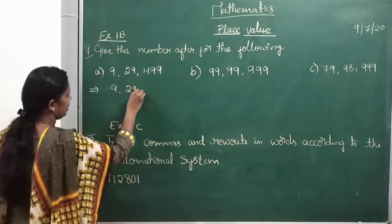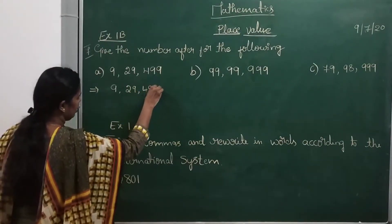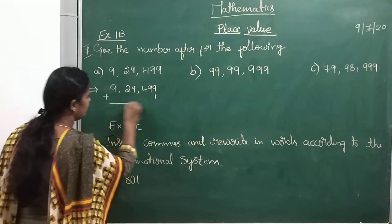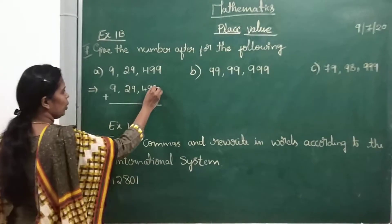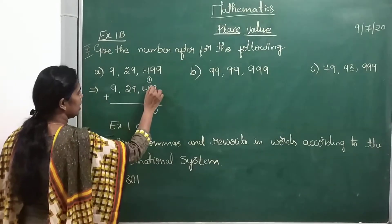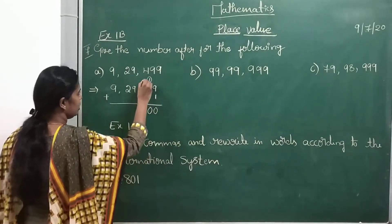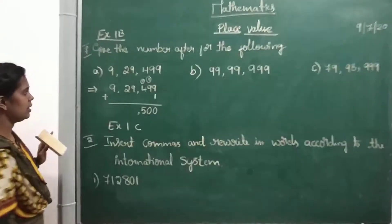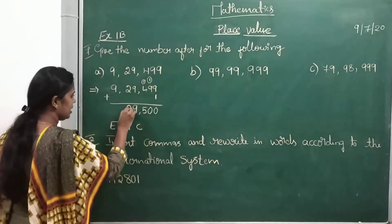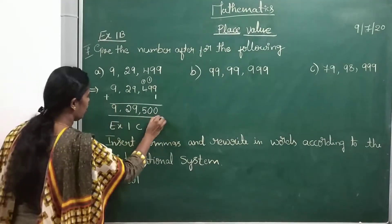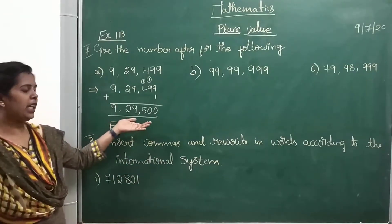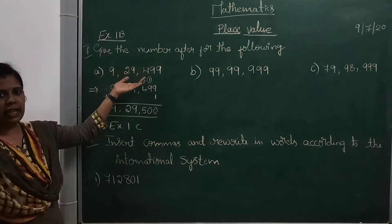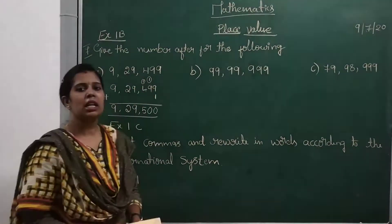So first I will write the number. See here the written number. I will add 1 to this given number. 9 plus 1 is 10, carry 1. 9 plus 1 is 10, carry 1. 4 plus 1 is 5. Then 9 as it is, 2 as it is, and 9. So what is our number? 9,29,500. This is the after number for 9,29,499.